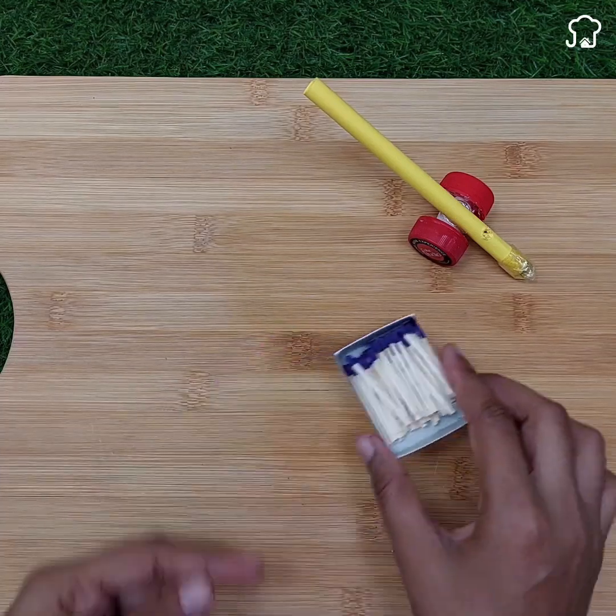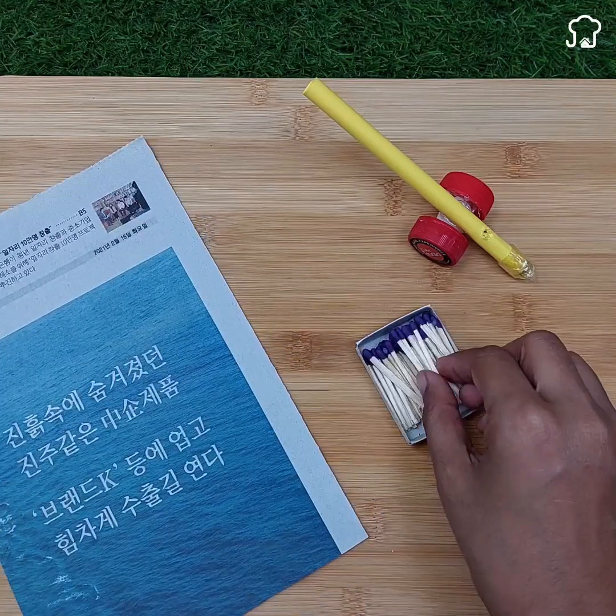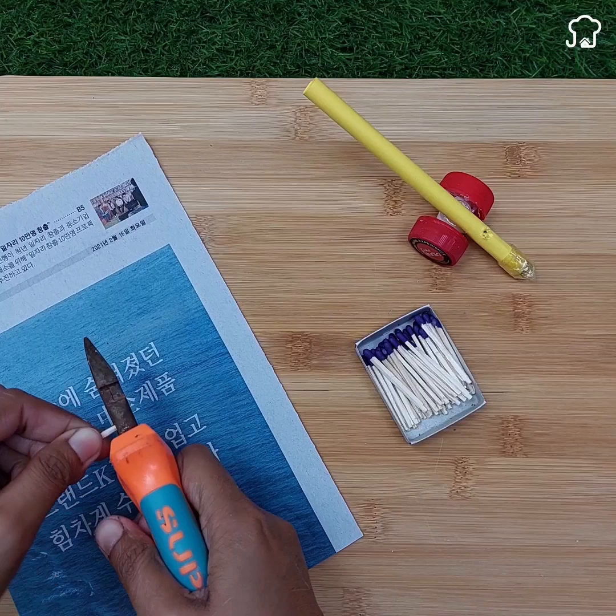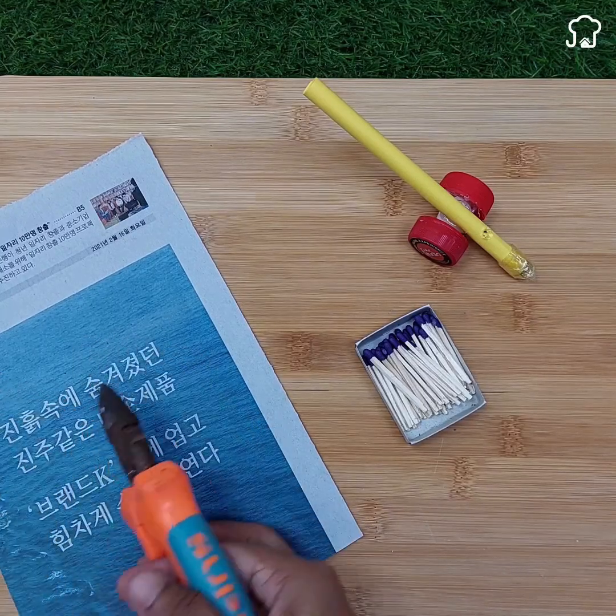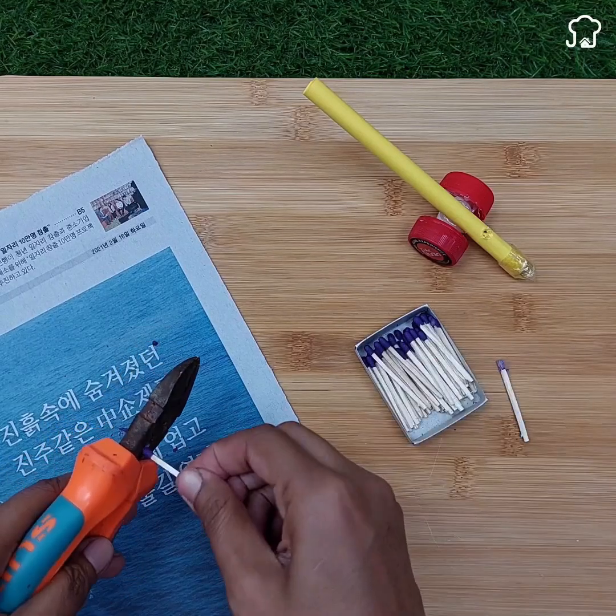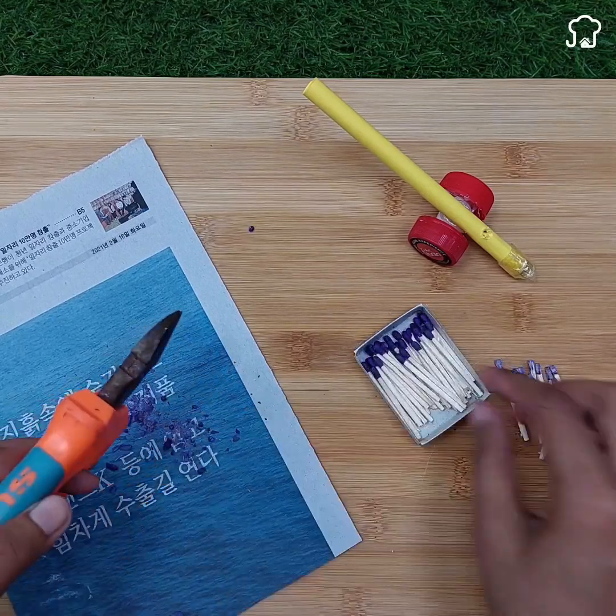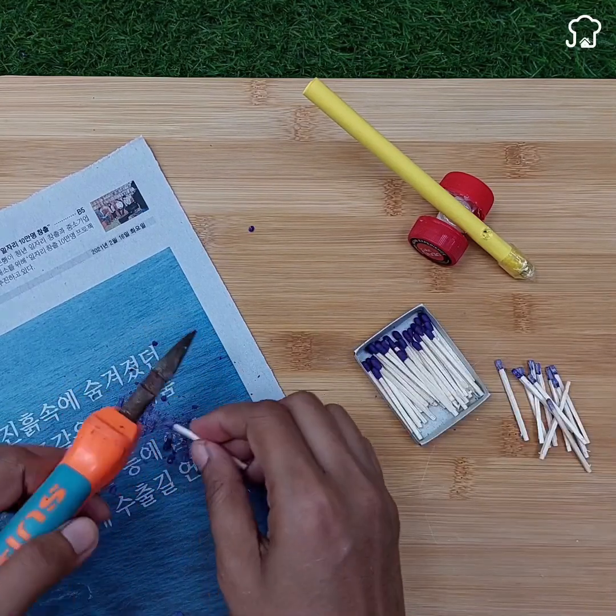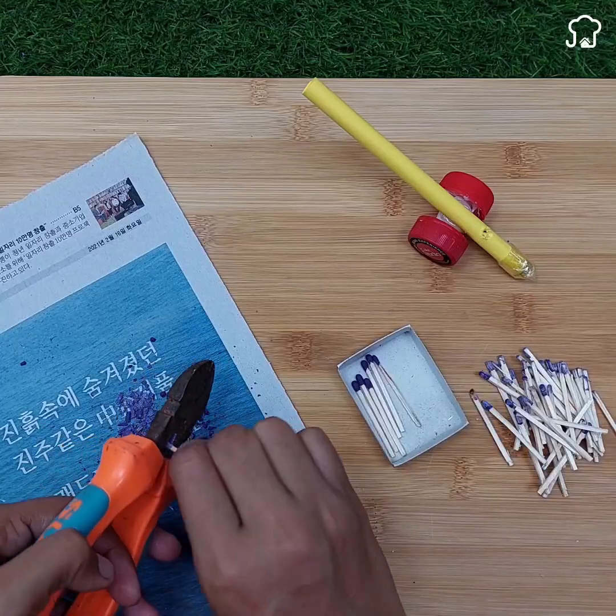Next, we take a box with matches and one by one, slowly, we are going to remove the red phosphor that makes them light. We will put a sheet of paper next to it so that nothing is wasted. Tell me below from which country or city you see us so that I can send you a special greeting in our next videos.